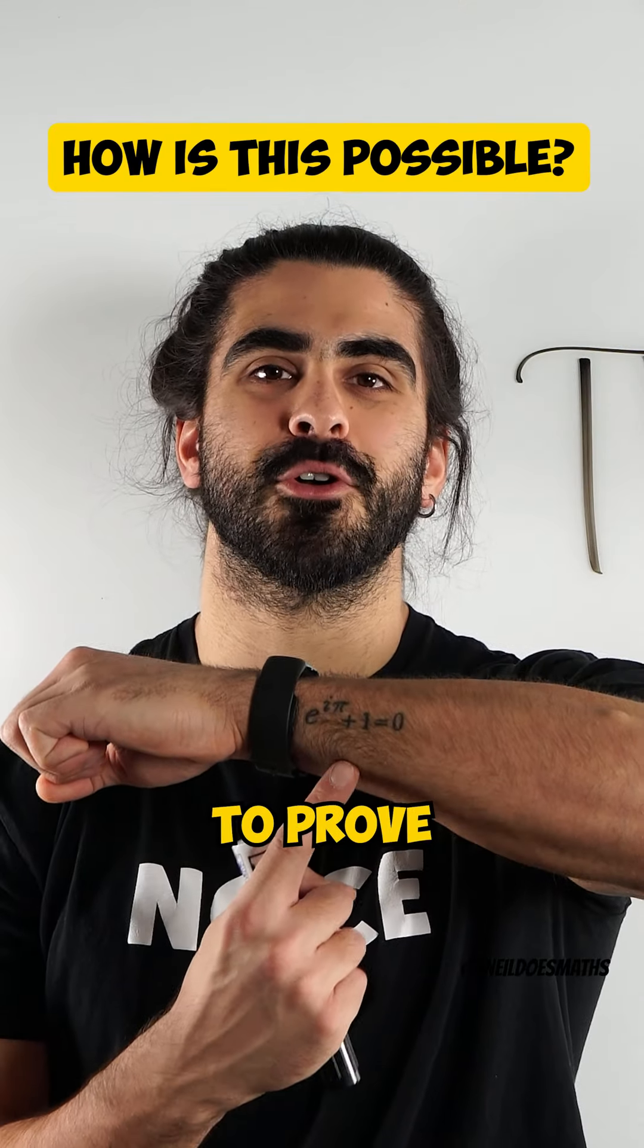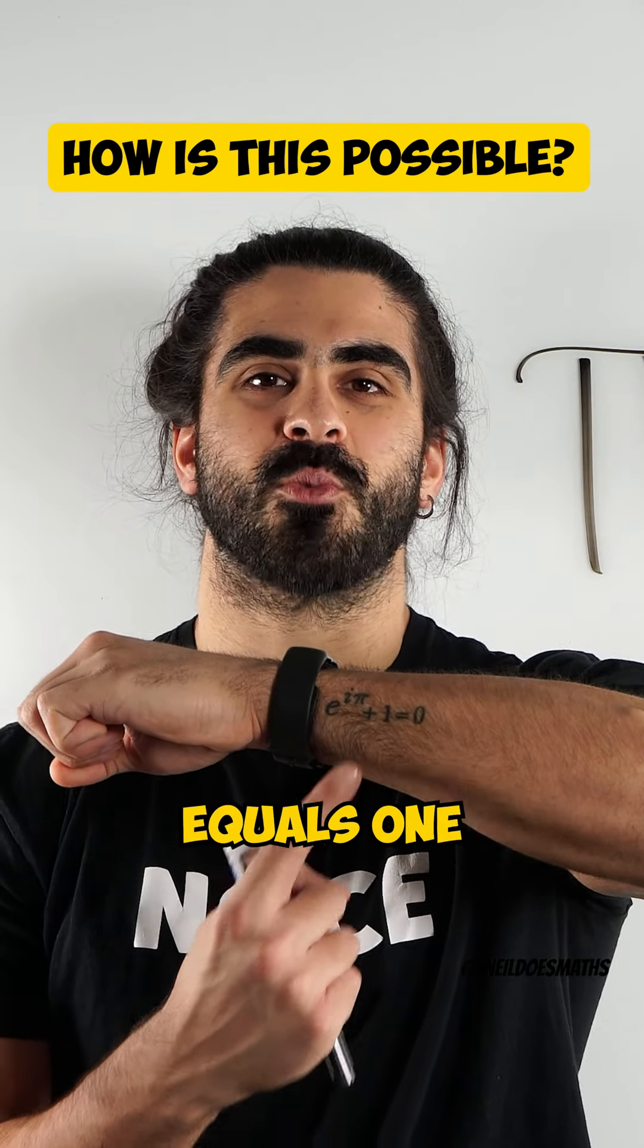How can we use Euler's identity to prove that pi equals 1? Let me show you.